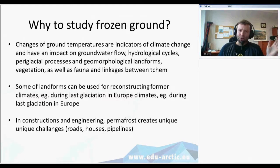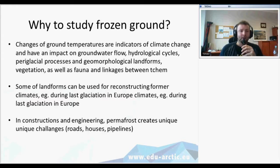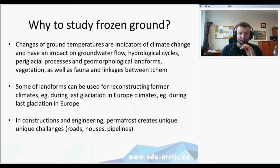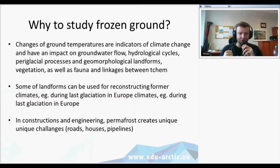Why is it important to study permafrost and changes of temperatures in the ground? These changes are indicators of climate change, and their changes have an impact on groundwater flow, hydrological cycles, different periglacial processes and landforms, and they are also important for vegetation, fauna, and all linkages in those systems. Some landforms can be used for reconstructing former climates — permafrost landforms can tell us something about what the climate was like in a previous era, for example during the last glaciation in Europe.